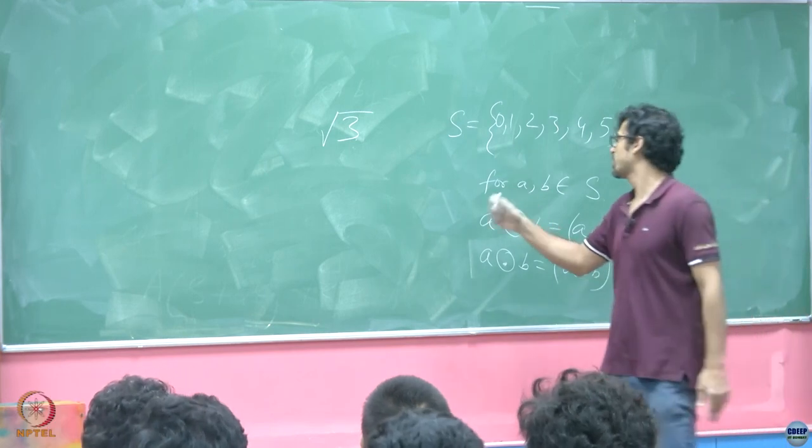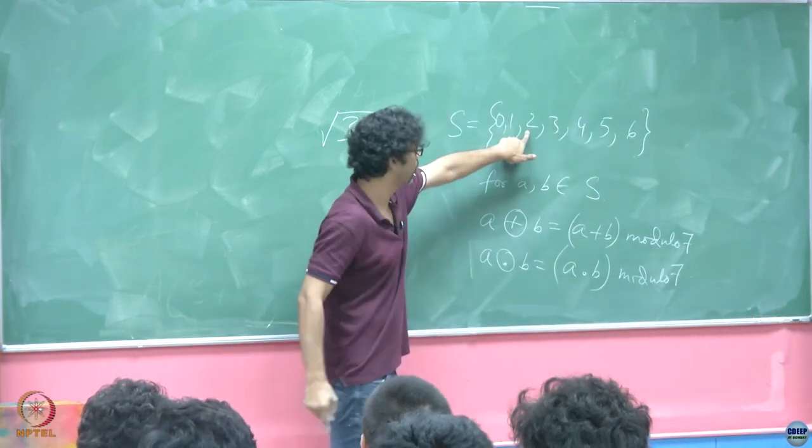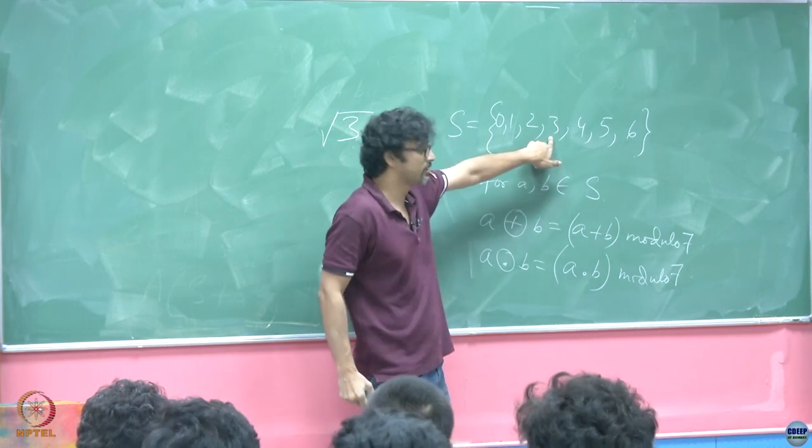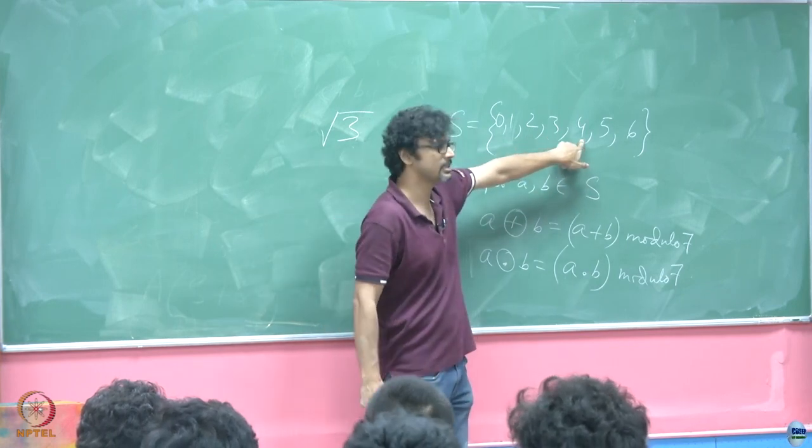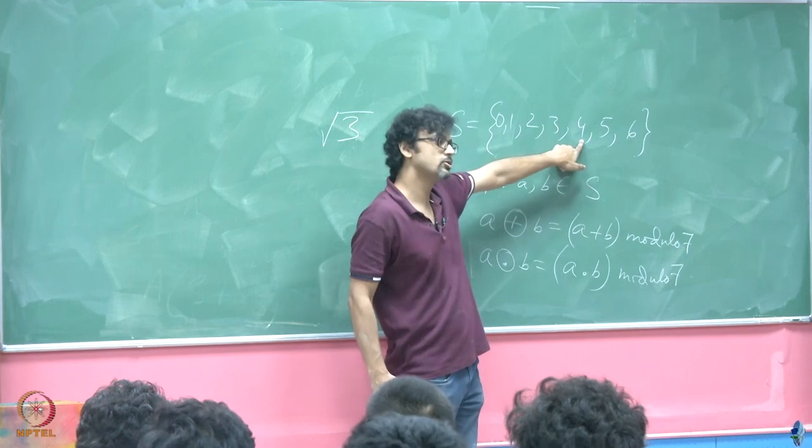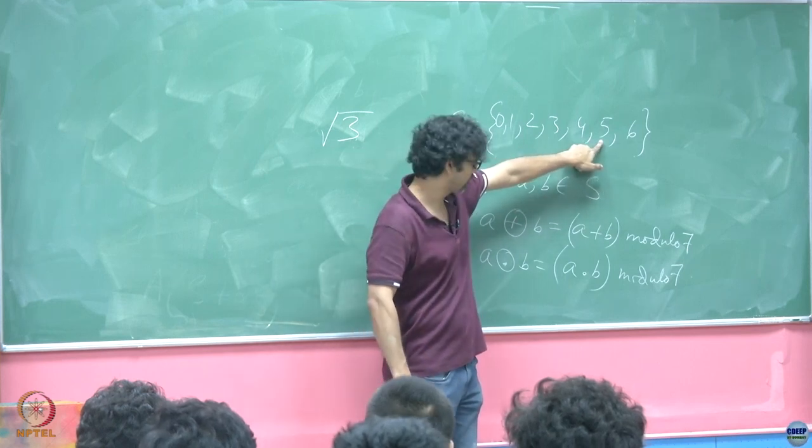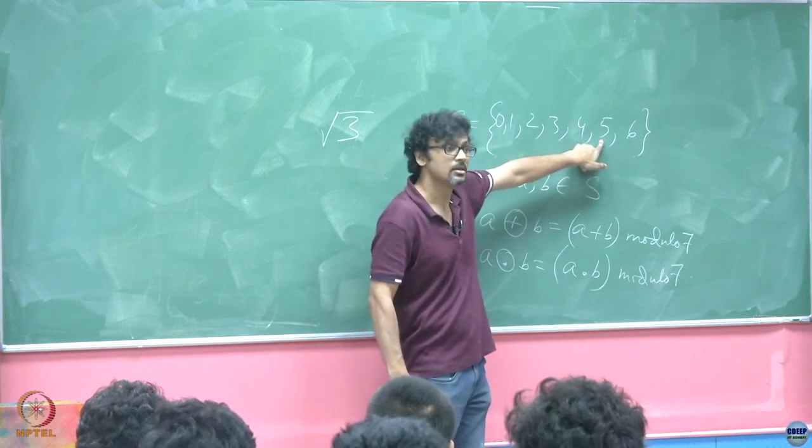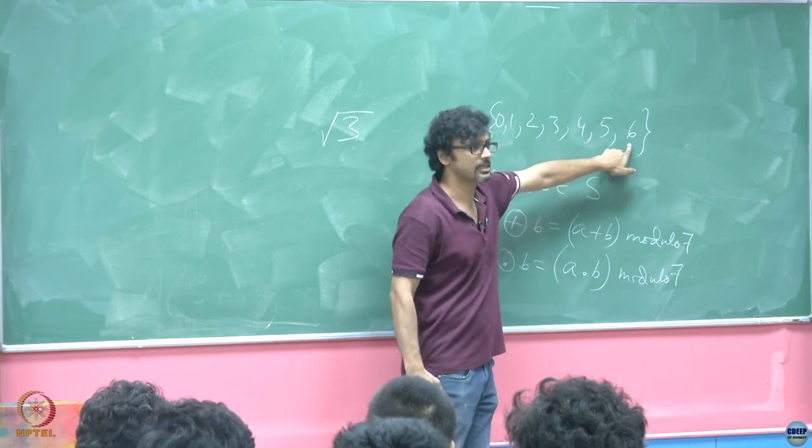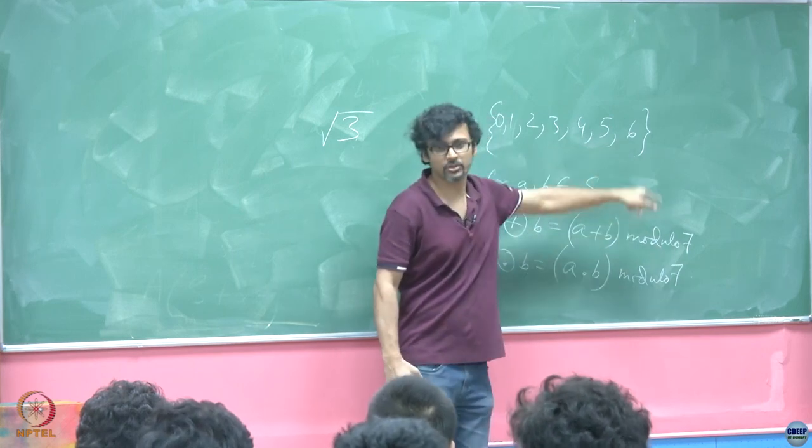So, let us check: 1 squared is 1, 2 squared is 4, 3 squared is 9, 9 modulo 7 is 2, 4 squared is 16, 16 modulo 7 is 2, 5 squared is 25, 25 modulo 7 is 4, 6 squared is 36, that is 1. So, in this number system unfortunately there is no square root of 3. However, you might have already noticed if I had asked to find square root of 2, there was 3 or 4.